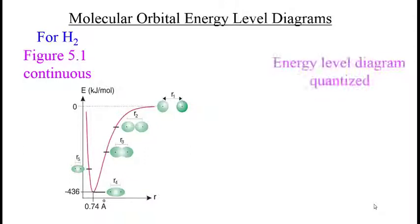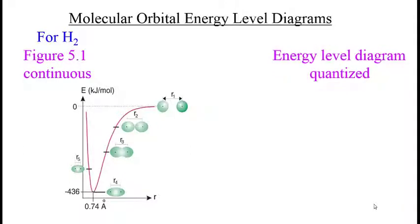For the energy level diagram, we are only going to pick out two points on the continuous plot: zero energy, where the two atomic orbitals are far enough apart to give no interaction, and at the bottom of the curve, where you have the best interaction in the molecule.